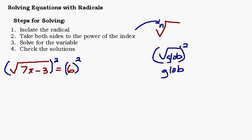That's a good thing, because we want to get rid of this square root in order to solve this equation. On the left-hand side, the squared and the square root cancel each other out, and all we have left is 7x minus 3. And then on the right-hand side, we have 6 squared, which is 36. And now you can see we have a very, very straightforward problem.